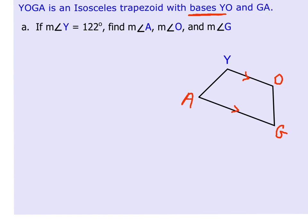Now I'm going to use the information given to me, which is that angle Y is 122 degrees, and we're going to find the other three angles. Remember that one of the properties of an isosceles trapezoid is that the base angles are congruent. That means that if angle Y is 122 degrees, then angle O has to be 122 degrees.